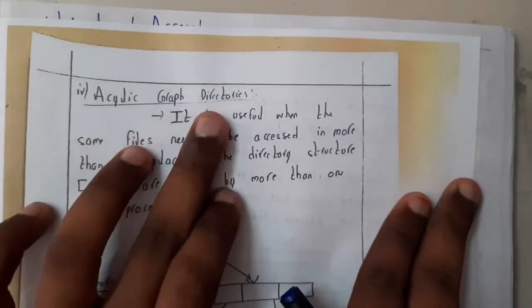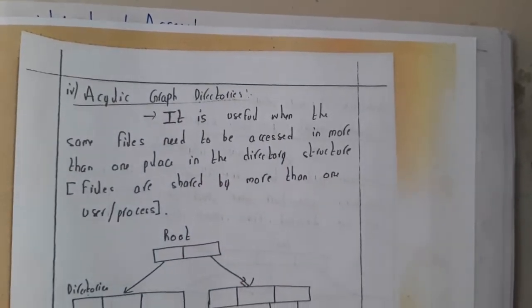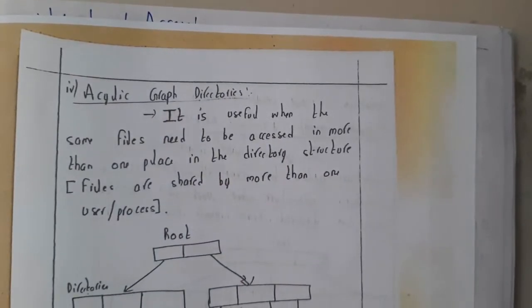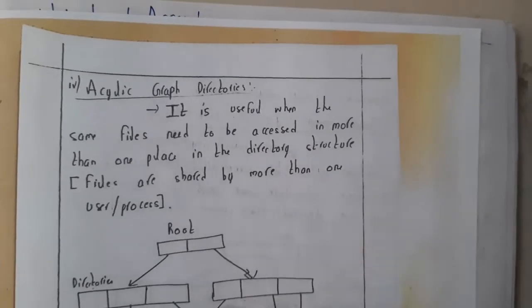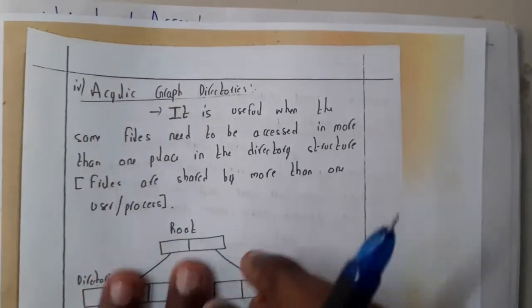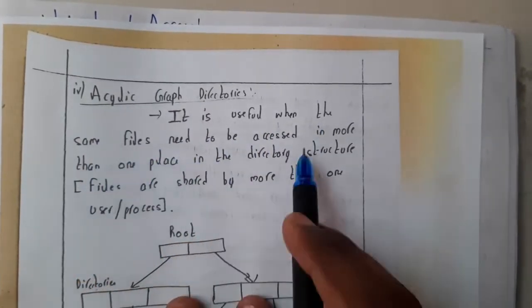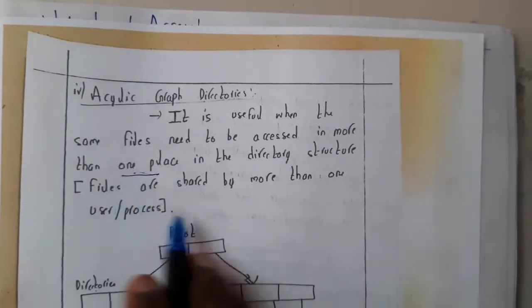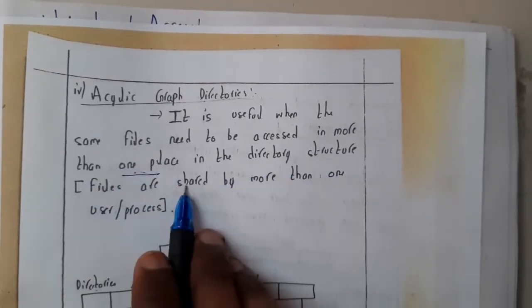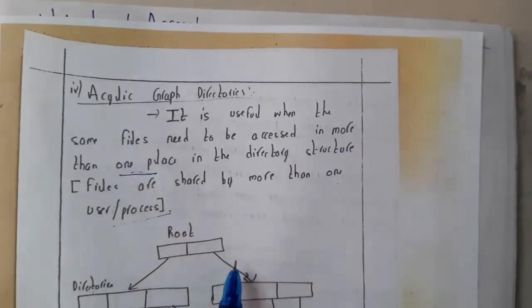After that, we got acyclic graph directories. Till now, we are discussing that sharing is not possible. That's the only disadvantage from the three directory structures. Acyclic graph structure introduces sharing. It is useful when the same file needs to be accessed in more than one place. In the directory structure, files are shared between users and processes.